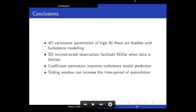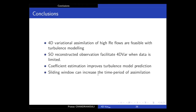In conclusion: 4D variational assimilation of moderate Reynolds number flows is feasible when turbulence modeling is introduced while retaining turbulent fluctuations in an unsteady framework. The snapshot optimization method enables 4D Var with limited data such as cross planes only. Coefficient estimation improves turbulence model prediction — a promising direction for turbulence modelers. Sliding windows are an expensive but plausible solution for converging statistics and performing long-term variational assimilation.